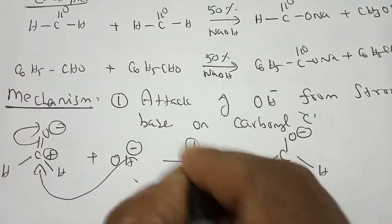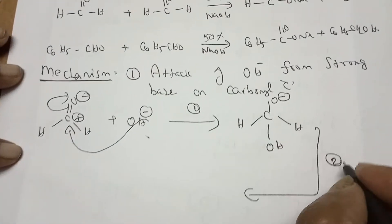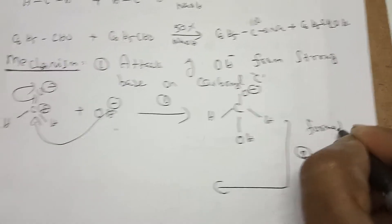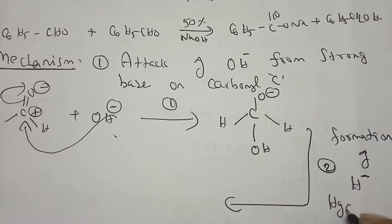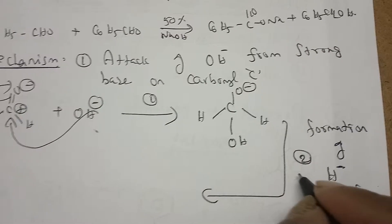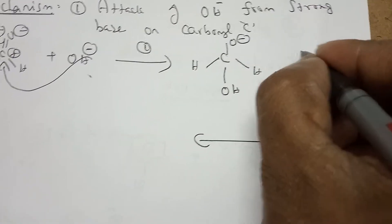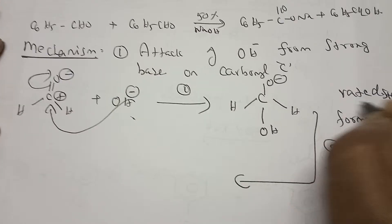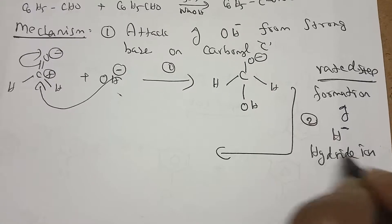Now let us write the formation of this ion in the medium after attack of the OH- from the strong base. Now this is step number two. This step is very very important: formation of H minus. H minus is called a hydride ion and this is the rate determining step, very very important slow step. It is called rate determining step.